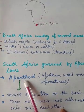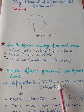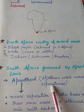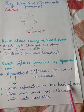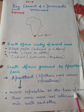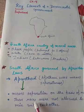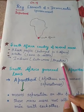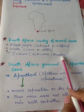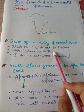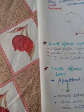Apartheid is an African word which means 'separateness' — separation on the basis of race. These three races were not allowed to mix with each other and were not given common facilities. In simple words, whites were having better facilities than black people and Indian people.